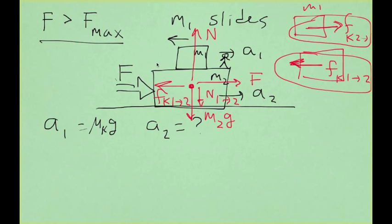So let's translate the free-body diagram into equations. In the x-direction, we have force F minus kinetic friction of 1 and 2. And that's it. That should be equal to M2 times the acceleration 2.